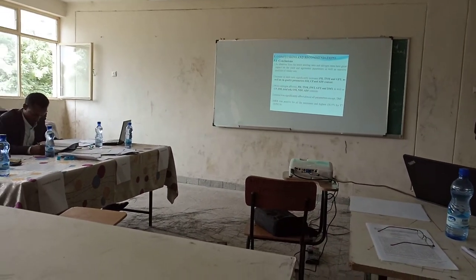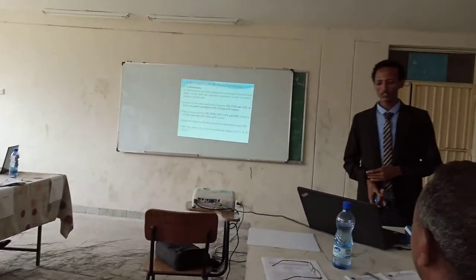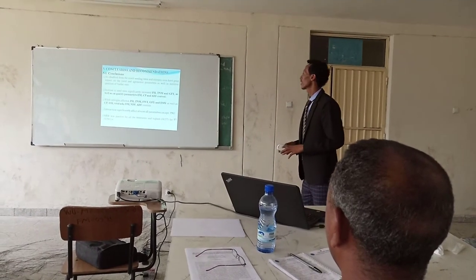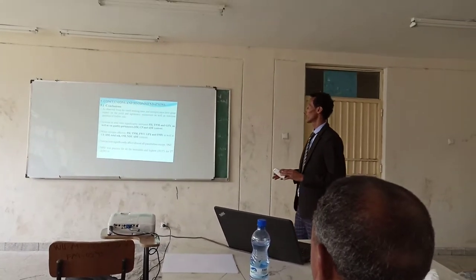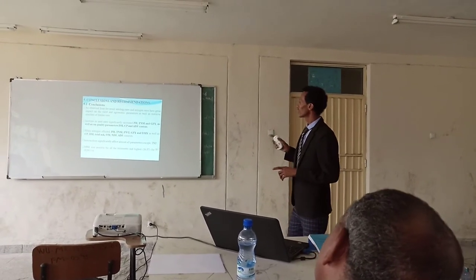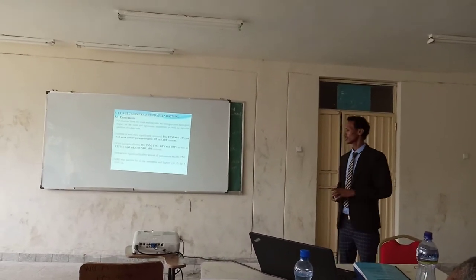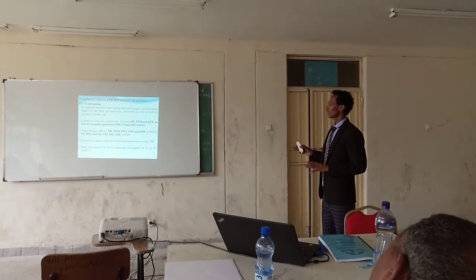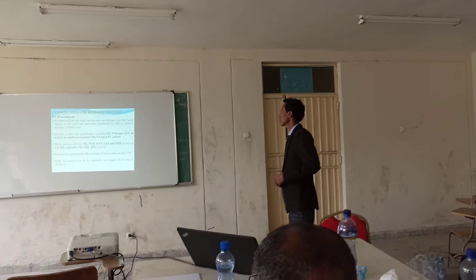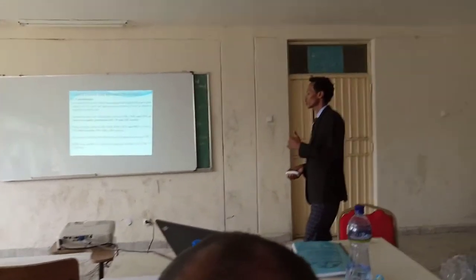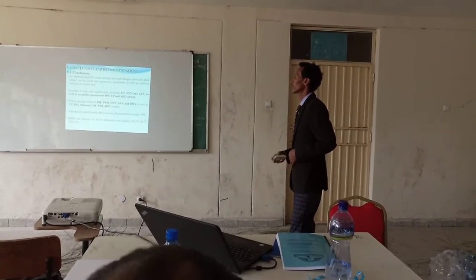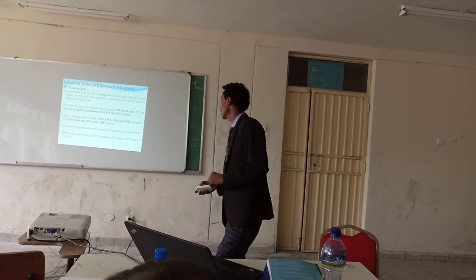Moving to the conclusions and recommendations: as observed from the results, seeding rate and nitrogen rates have a greater impact on the yield and agronomic parameters overall, as well as the nutritive quality of the whole crop. These were significantly affected by the treatment combinations. With increased seeding rate, relative total tiller number and total number per meter range increased, as well as quality parameters such as dry matter, crude protein, and acid detergent fiber content.